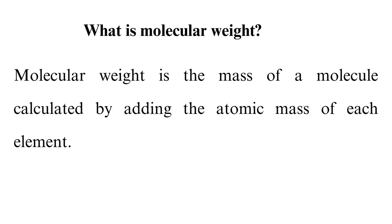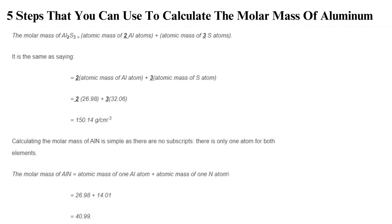3. Molar mass and compounds. To calculate the molar mass of compounds, you will use similar steps to those of calculating molecular weight. You add the atomic mass of every element in the compound. Below are the detailed steps you can use to know the molar mass of aluminum compounds. Five steps that you can use to calculate the molar mass of aluminum. Use the following steps to calculate the molar mass of aluminum matter. We will use two examples of aluminum compounds to help you understand the steps better.